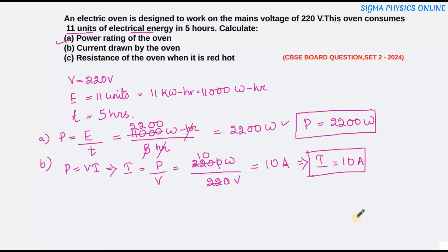The power is 2200 watt and the current drawn is 10 ampere. Next, we come to the resistance of the oven when it's red hot.